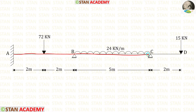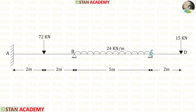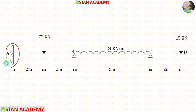We also have an overhanging span CD. In span AB, we have a point load acting at the center. In span BC, we have a uniformly distributed load acting for the full span. In the overhanging span CD, we have a point load. In point A, we have a fixed support, and in points B and C, we have hinged supports.